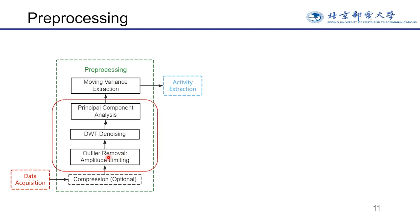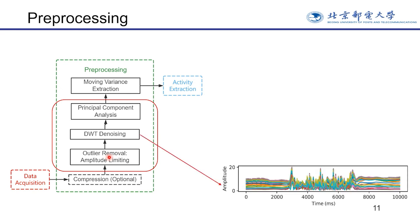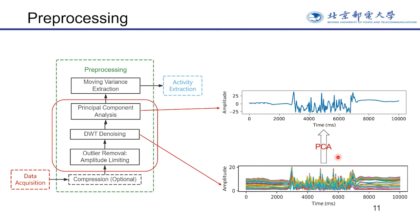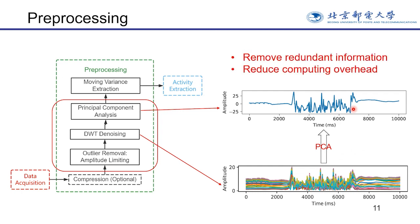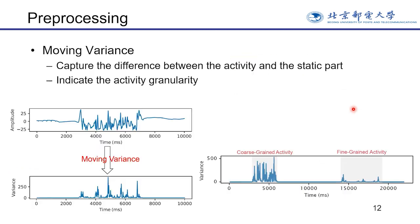In the preprocessing, we first limit the amplitude of CSI to filter out impulse outliers caused by accidental factors. Then DWT can effectively filter out the noise and restore the original characteristics of the signal. After denoising, we use PCA to reduce multi-dimensional CSI to one-dimensional CSI, which can remove redundant information and reduce computing overhead. In the result of this step, we can see the changes during activity are larger than during the static period. So we use moving variance to capture the differences.